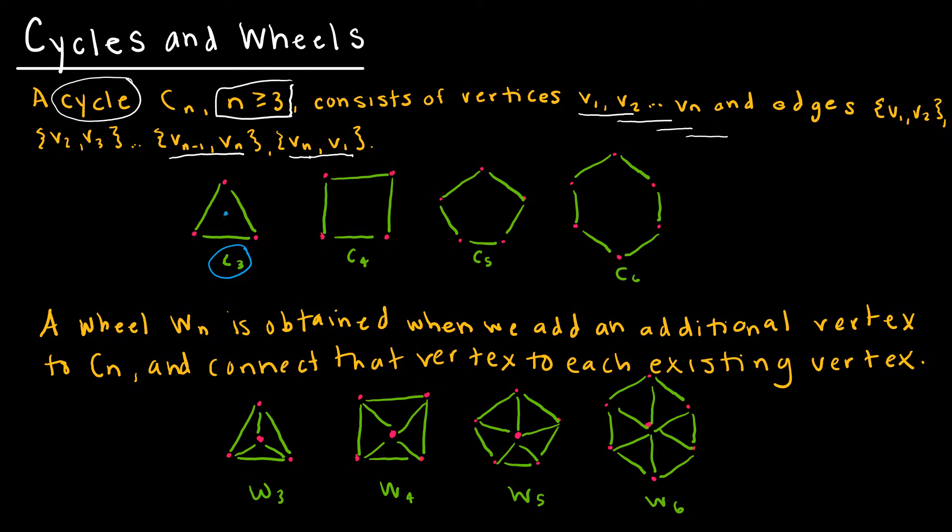If I take another vertex in the middle and connect it to each of the existing vertices, that's W3, my wheel with three vertices. C4 is a cycle with 4, and adding a vertex in the middle makes it W4.